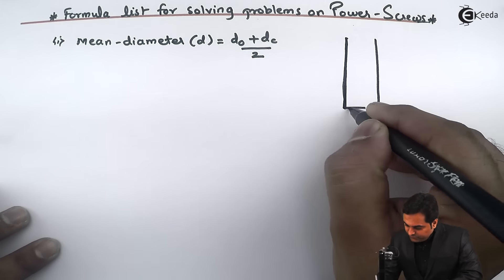Next is efficiency of screw thread. Efficiency is denoted by eta of screw, and that is equal to ideal effort upon actual effort. So here this becomes, if I write actual effort, that is W tan alpha upon W into tan of alpha plus phi. So this is the formula to calculate the efficiency of screw thread.